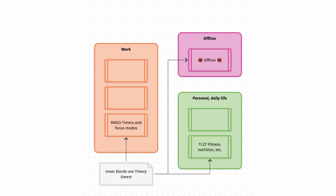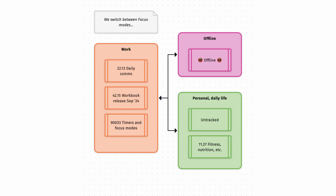I'm either at work, having some personal time, or offline. Within those, the smaller blocks are the individual pieces of work I'm doing. In my work mode, in a Johnny Decimal context, I'm using the IDs from my Johnny Decimal system. In personal, I'm mostly in an uncategorized personal life mode, but I do use one ID specifically to track fitness. Through the course of the day, we switch between Focus Modes and/or switch timers within Focus Modes.